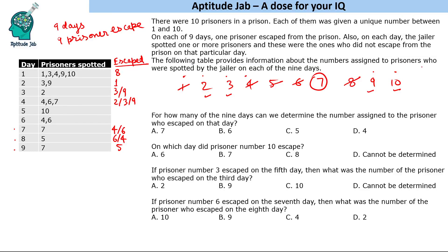On the 5th day, prisoner 10 is spotted, so 10 did not escape. Again, prisoners 2, 3, or 9 could have escaped on this day. After the 5th day, 4 people still have to escape. If we select 3 or 9 for days 3 and 4, we are left with 2 and 9 or 2 and 3. So prisoners 2, 3, and 9 will escape on days 3, 4, and 5 in some order.